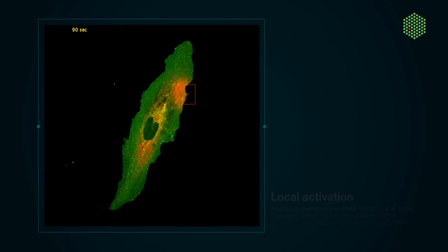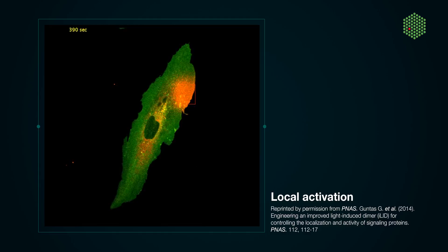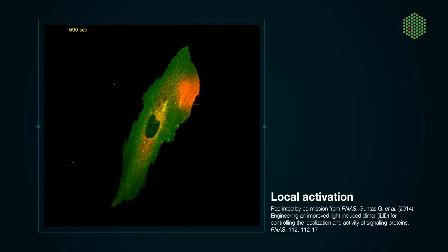Up until now, the Cry2-CIP1 dimerization system has successfully been applied to optically control numerous biological processes, such as membrane composition, transcription, receptor signaling, and cytoskeletal dynamics.